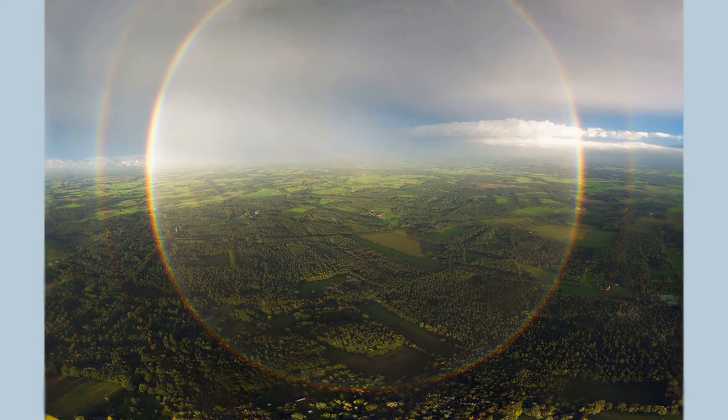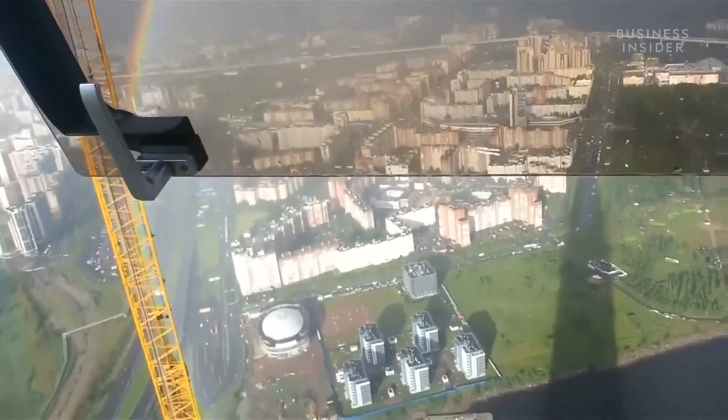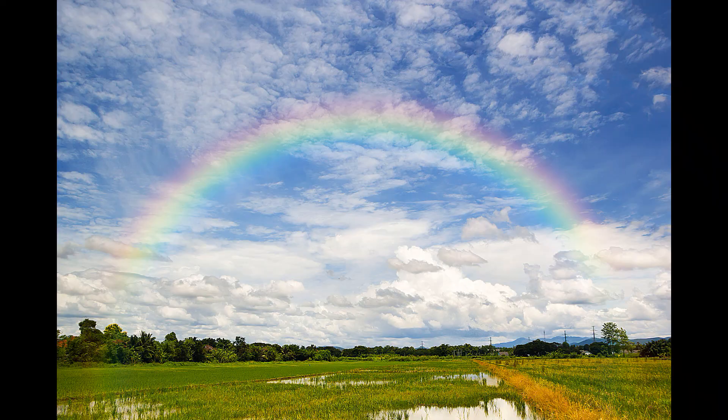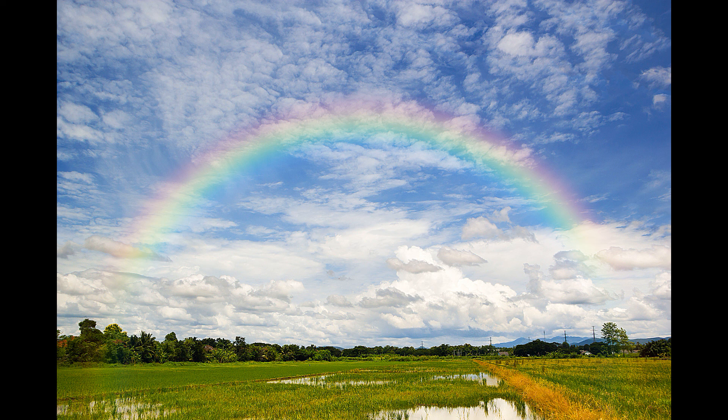Rainbows are not arcs but they are full circles. As you can see in this video, the rainbow is not an arc but a perfect circle. We don't see the full circle because the rest of it gets covered by land.